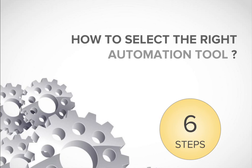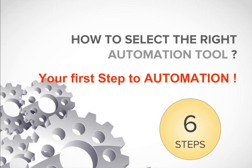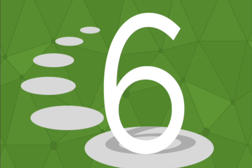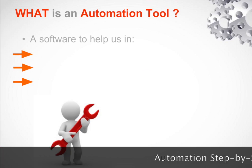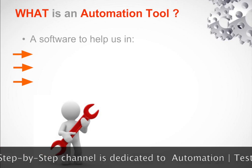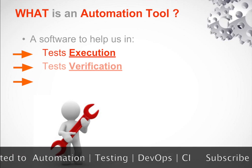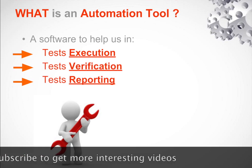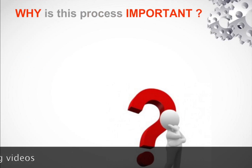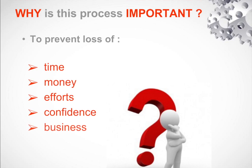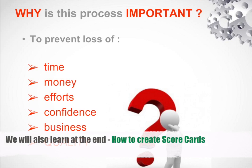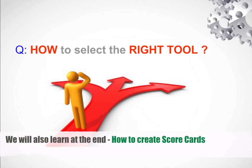We will cover how to select the right automation tool in six easy steps, which is the very first step to your test automation journey. An automation tool is a software that helps us in test execution, test verification, and test reporting in an automated way. The process of selecting the right automation tool is very important so that it can prevent loss of time, money, efforts, confidence, business, and overall quality.